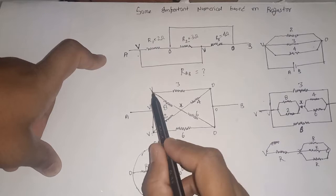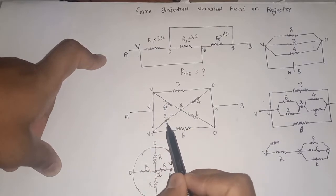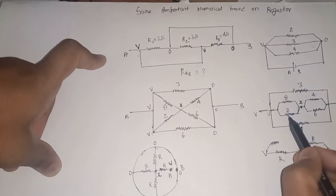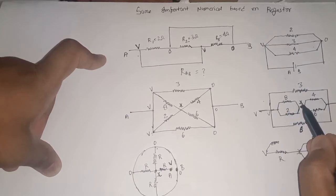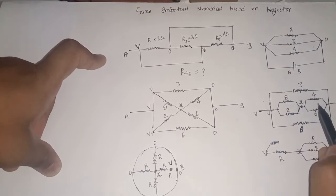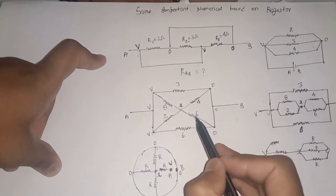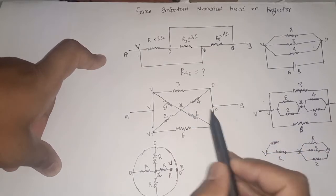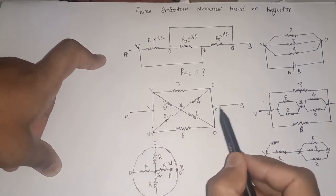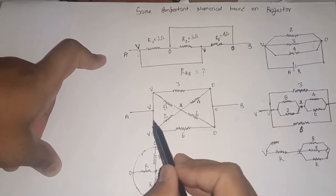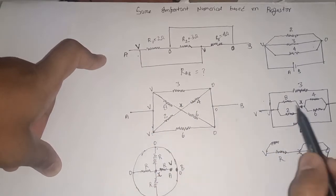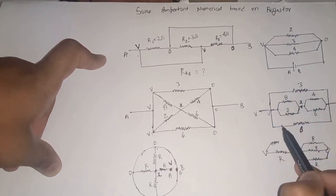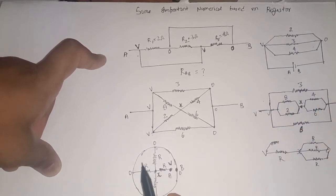Between V and X, two registers are connected — one 8 ohm and one 2 ohm — both attached in parallel between V and X. Similarly, between X and 0, who is attached? 4 and 6 — that is 4 and 6 are attached between X and 0. And between V and 0, observe carefully — 3 ohm and 6 ohms are attached between V and 0.